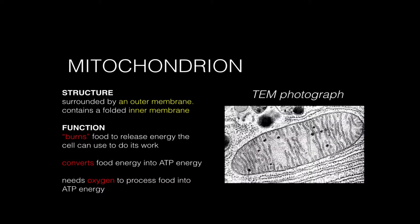Here is a transmission electron microscope picture of an actual mitochondria from an animal cell. You can see in this picture it's got an outer layer, and then it's got an inner layer that is much folded. Because this is a really thin slice of a mitochondrion, it's harder to see the folds, but believe me, they're there.